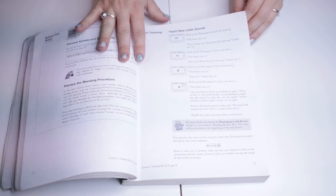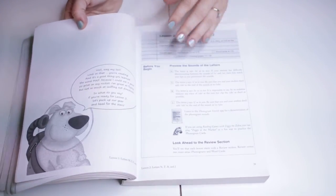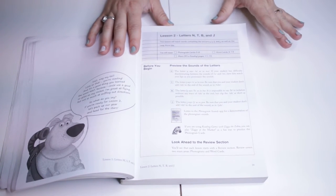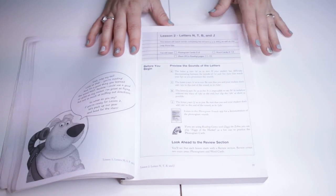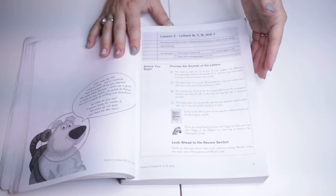All right, so now that I've generally explained how it works, I'm going to skip ahead to the next lesson and show you kind of how it actually works. So each lesson generally works the same way. Now the only thing that's different is at the beginning of the book it's not so book heavy for reading, and towards the end here you will be reading way more.